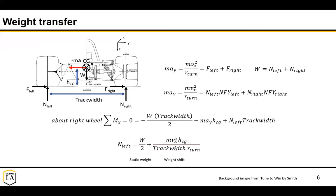In order to minimize this weight shift, you want to decrease the height of your CG - so you have less weight transfer - and increase your track width. That will help you get more grip as you go around the track. A lot of these fundamentals help you think about the design of your vehicle.